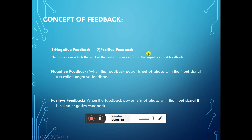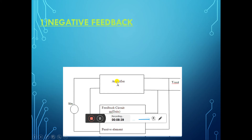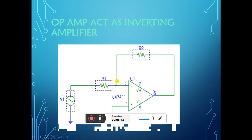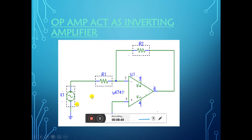In operational amplifiers, there are two kinds of feedback: negative feedback and positive feedback. When the feedback signal is out of phase with the input signal, it is known as negative feedback. The op-amp acts as an inverting amplifier when the input signal is applied to the inverting terminal.